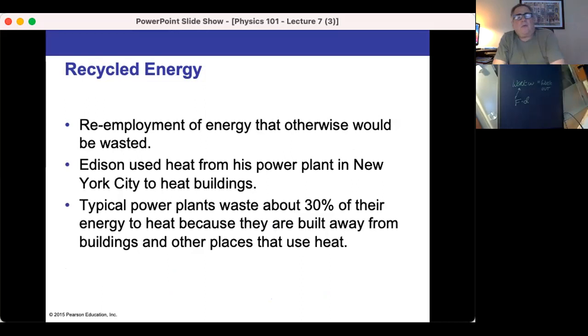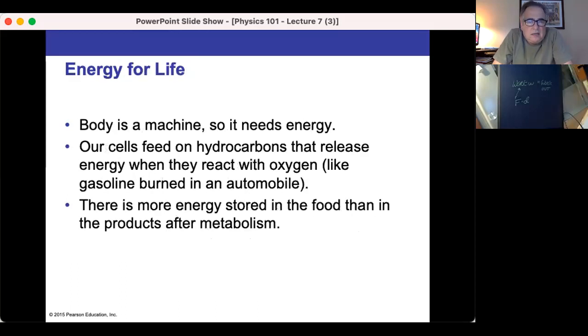We want to try to recycle energy as much as we can. Edison used heat from his power plant to heat buildings. The typical plant wastes about 30% of its energy. And the body is a machine. We are not as efficient. The cells feed on hydrocarbons that release energy when they react with oxygen. Our metabolism isn't 100% efficient. We have waste products.